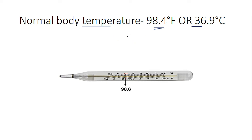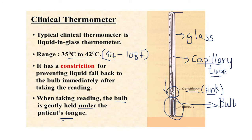Since the purpose of the clinical thermometer is to measure body temperature, it is graduated between 94 to 108 degrees Fahrenheit. The clinical thermometer is a liquid-in-glass thermometer and has a constriction — only the clinical thermometer has a bend just above the bulb to prevent the backflow of mercury.